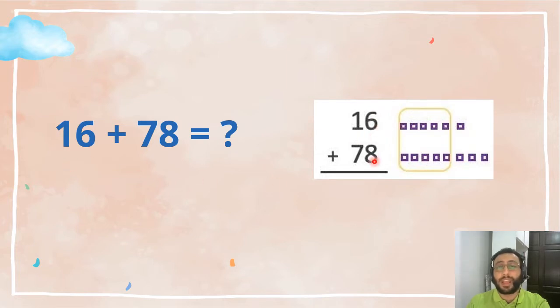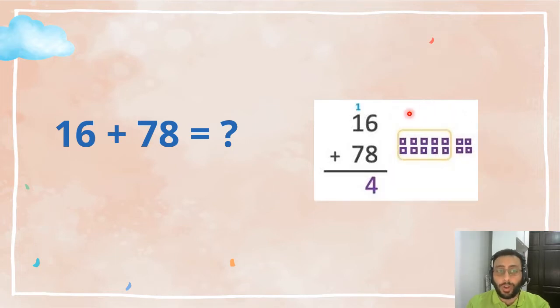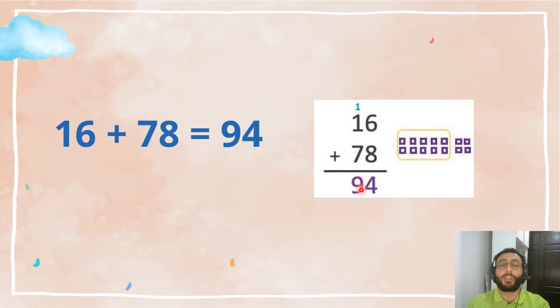6 plus 8 equals 14. You see this is 14, but we cannot write 14 here. We regroup 10 out of the 14 into 1 ten. We write it up here, and we keep the 4 down here in the ones. Now we just add all of these together: 1 plus 1 equals 2, 2 plus 7 equals 9. Easy, 94.